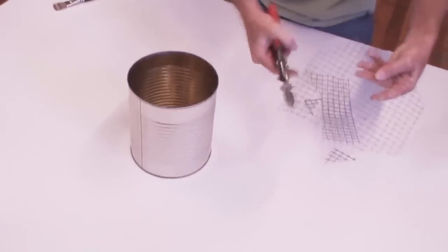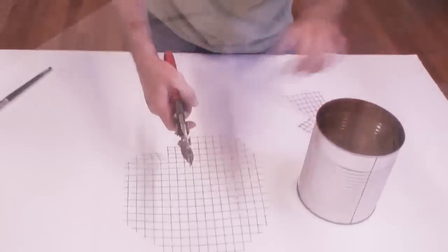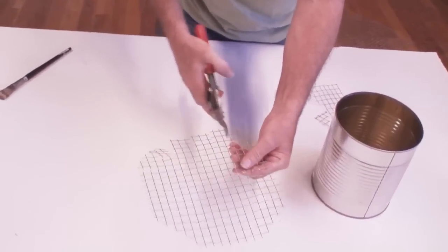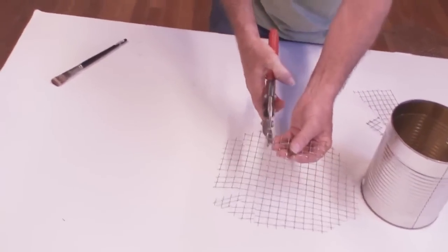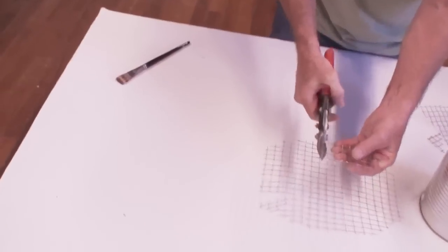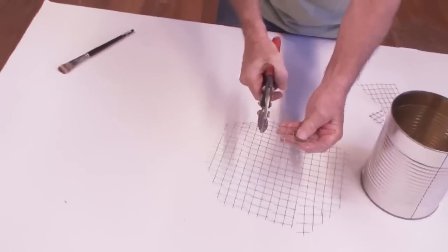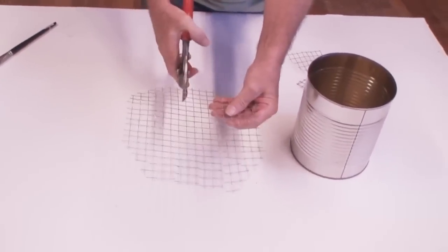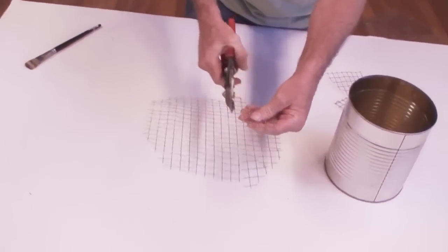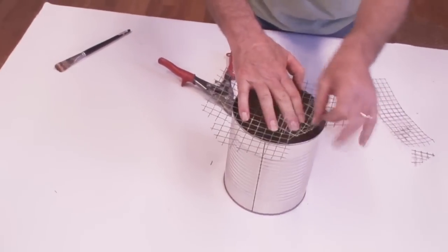You're just kind of rounding it off here. I'll do a little more trimming. Okay, now what you want to do is about every inch all the way around the bird screen, cut in toward the middle about two inches. We're going to bend this metal up so it will fit down into the bottom of the can. Now lay the